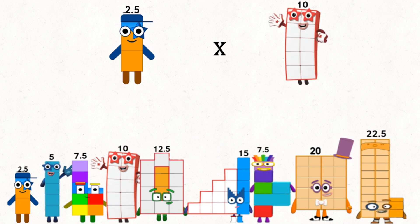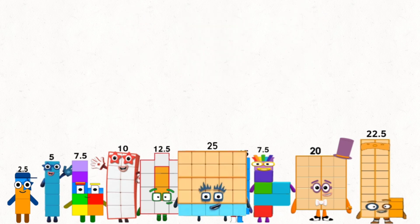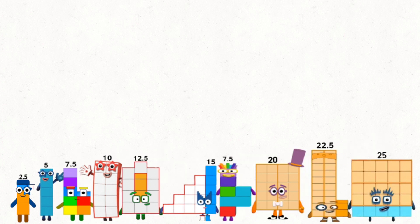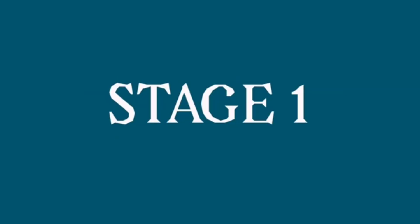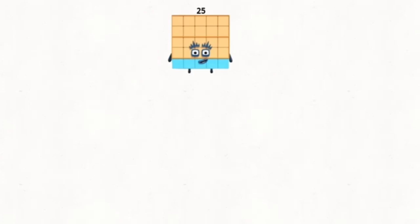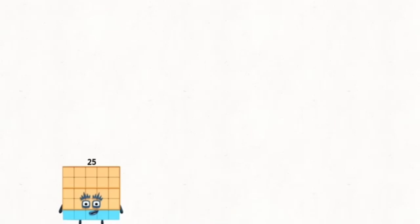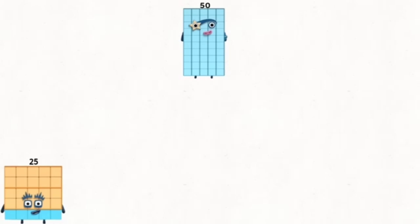2.5 times 10 equals 25. Stage 2. 2.5 times 10 equals 25. 2.5 times 10 equals 50.